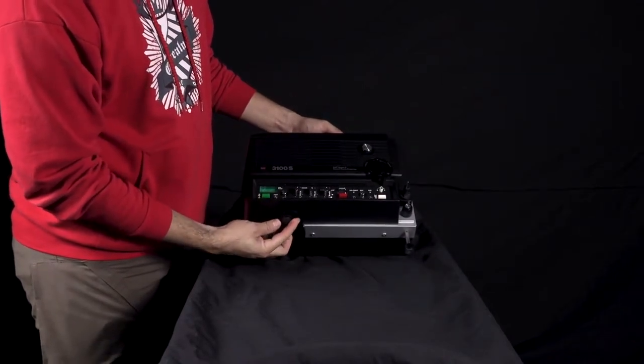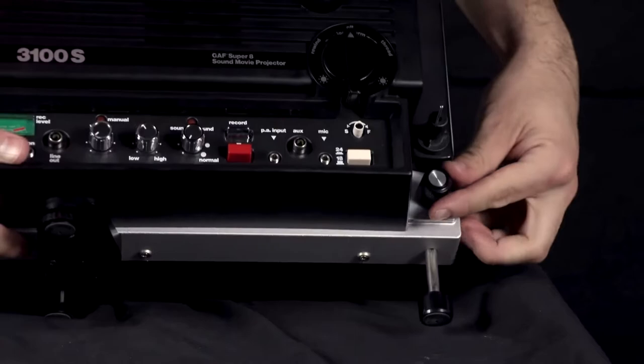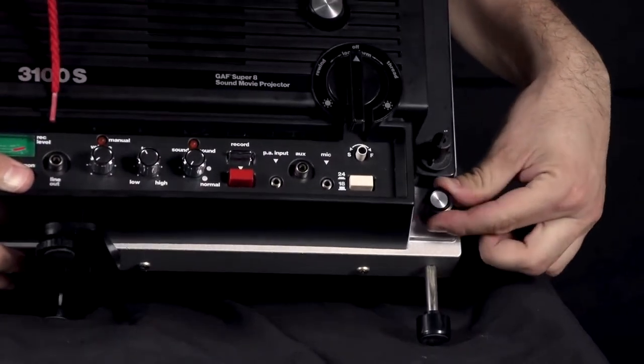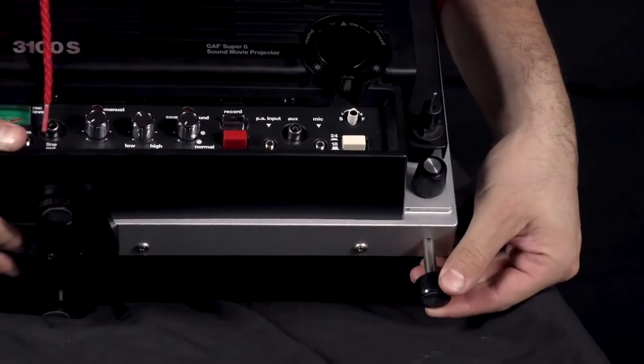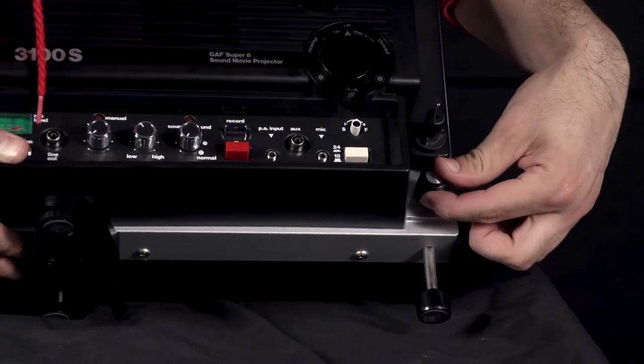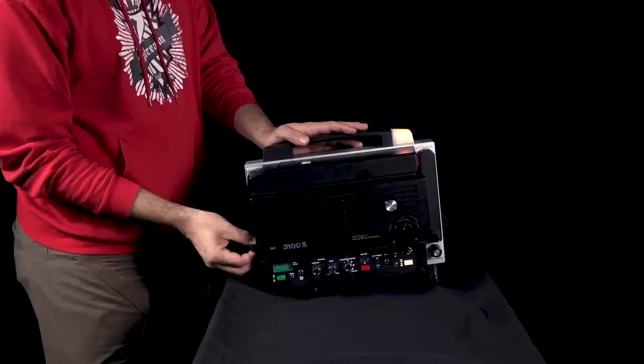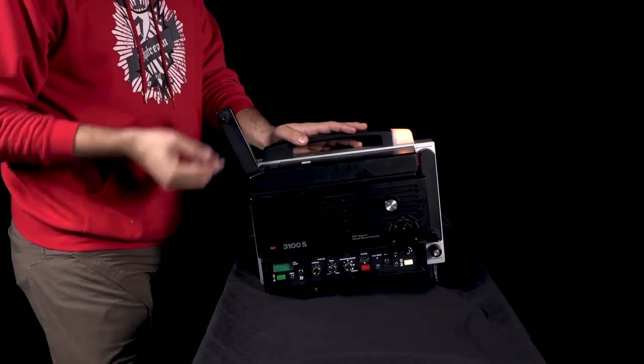You can adjust the position and height with the bottom feet and this knob on the front. Plug in the projector and raise the reel arms into playing position.